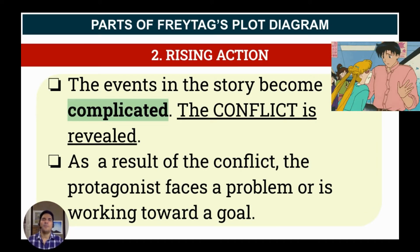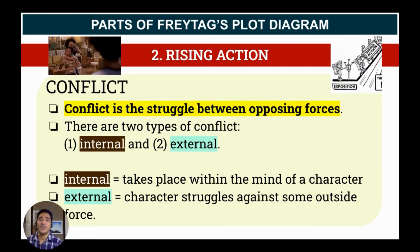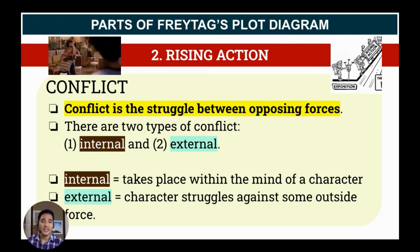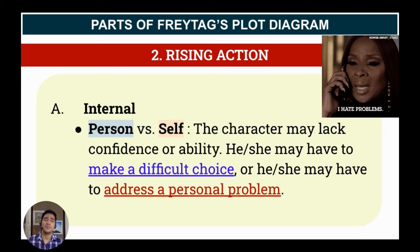In the rising action, the events in the story become complicated. The conflict is revealed and the problem is introduced. As a result of the conflict, the protagonist faces a problem or is working toward a goal. Conflict is the struggle between opposing forces. There are two types of conflict: internal and external. Internal takes place within the mind of a character. Under internal, we have person versus self — the character may lack confidence or ability, may have to make a very difficult decision, or may have to address a personal problem.